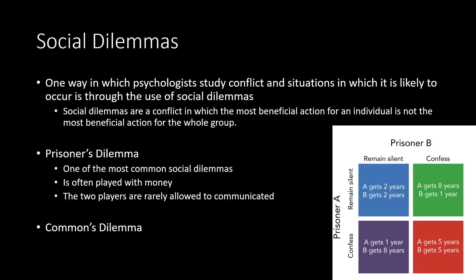One of the most famous social dilemmas is called the prisoner's dilemma, used extensively in psychological research and marketing. The classic example involves two prisoners being interviewed and encouraged to pin blame on each other. If you pin blame on your partner, you receive a deal and a lesser sentence, but they get a much harsher one.